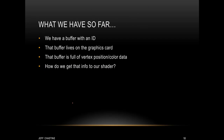So what do we have so far? Right now we have a buffer that has an ID, and that buffer lives on the graphics card. The buffer is loaded with vertex position and color information. The question is, how do we get that information to our shader? Or better yet, how does the shader access the information that's in the buffer?